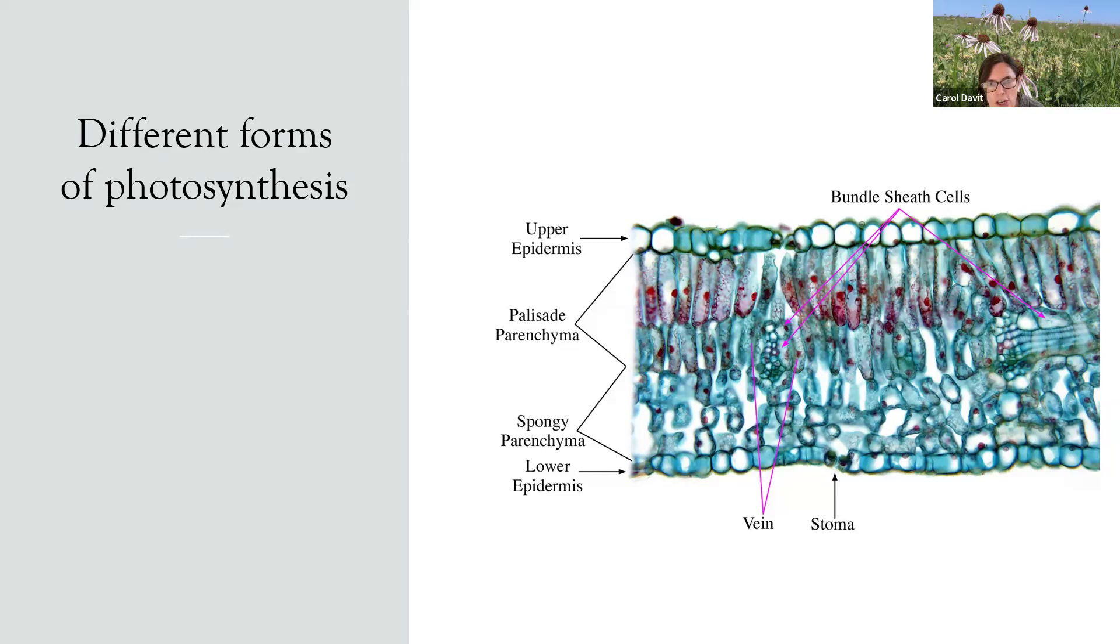Phil asks, is ion exchange important for nutrient uptake as well as direct absorption with water? Yeah. There's a lot that goes on at the root hair level. If ion exchange is messed up in some way, like say the pH is way off, then that can affect the water being able to get into the cells. So ion exchange is very important just because it can actually affect how the cells take in water.